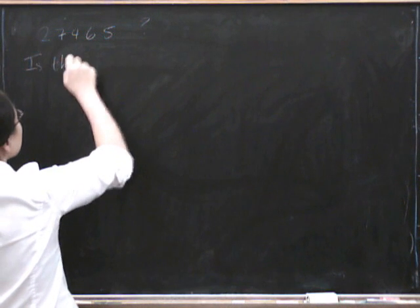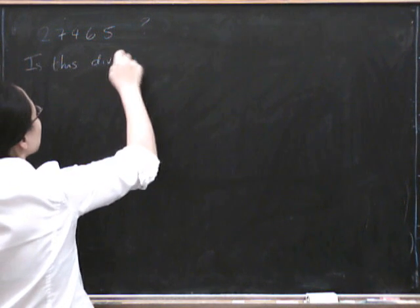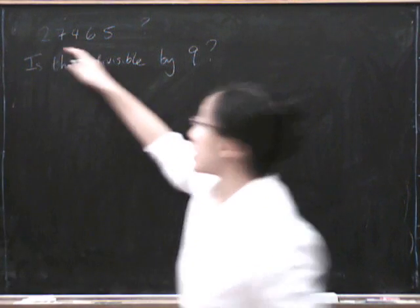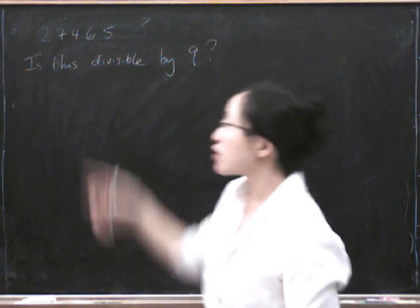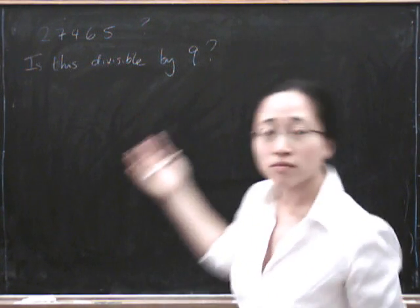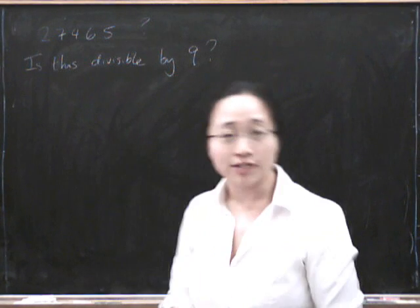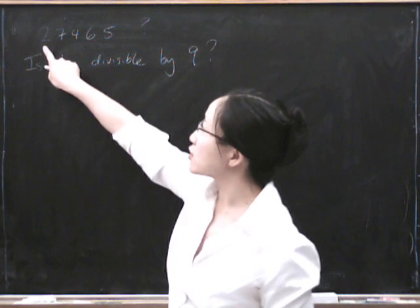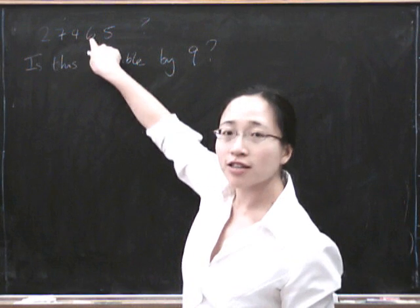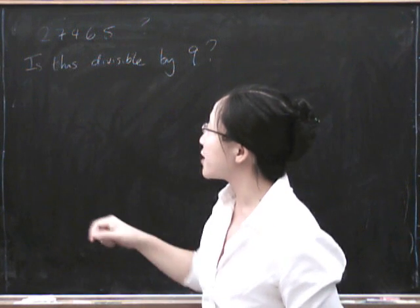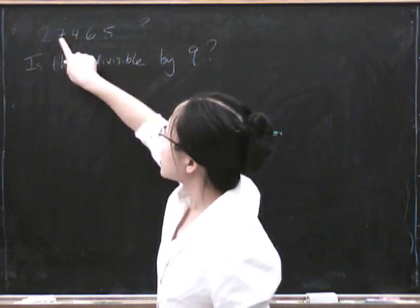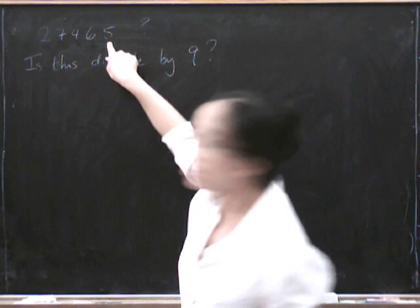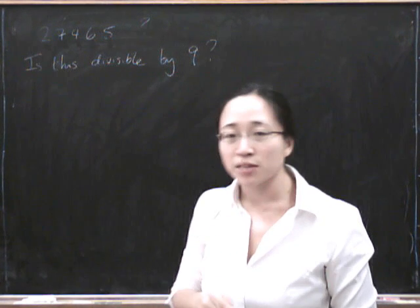Is this divisible by 9? So one thing you could do is, of course, you could type into your calculator this divided by 9. You could try performing a division without using a calculator to see if the number you can get out is a whole number. But there's this little trick which you might have seen, that says all you have to do is add up the digits of this number and see if that number is divisible by 9. So if we add these numbers up we get 9, 13, 19, 24. That number is not divisible by 9.